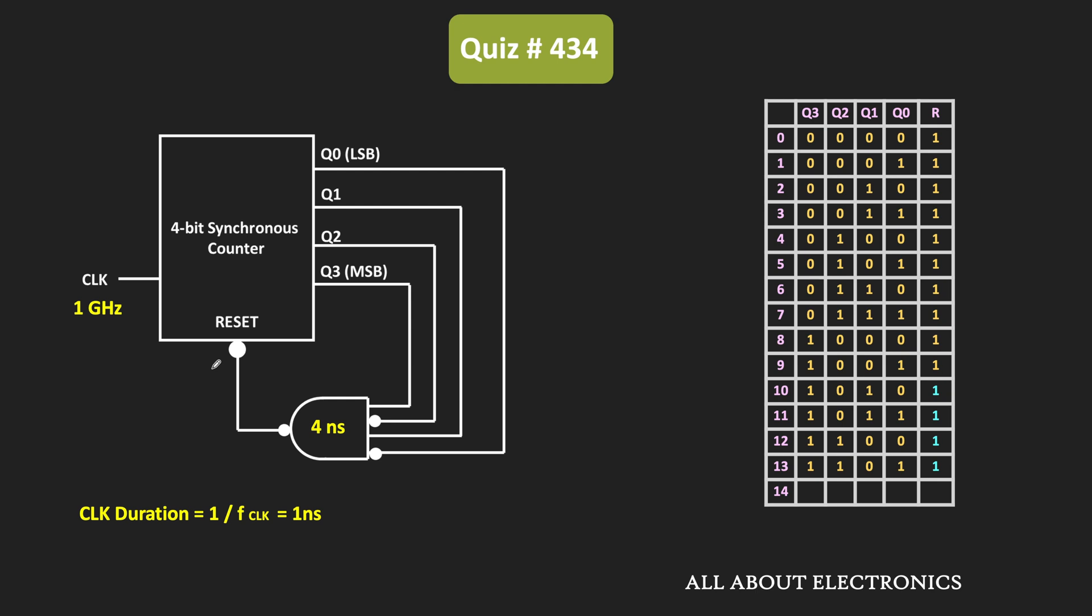But in this case, since the propagation delay of the NAND gate is equal to 4 ns, it will become 0 after 4 ns. Moreover, here the clock duration is also equal to 1 ns. So by the time the NAND gate generates the logic 0, the synchronous counter already receives 4 more clock cycles.